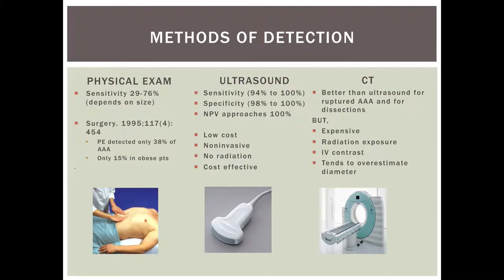There are three methods for detection. You can do a physical exam, but the sensitivity is fairly low and even lower in obese patients because you can't palpate the abdominal aorta. Ultrasound is very sensitive and very specific, and the negative predictive value approaches about 100 percent. The advantages are it's low cost, non-invasive, and there's no radiation involved. The gold standard is still a CT scan — it's better than ultrasound, especially for looking at ruptured AAA as well as dissections.